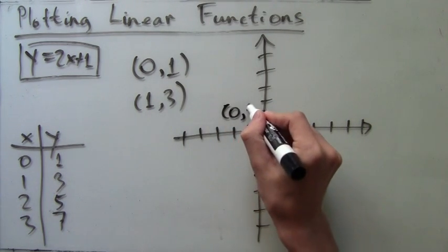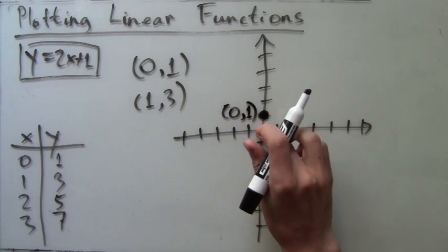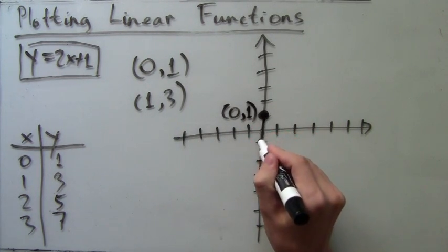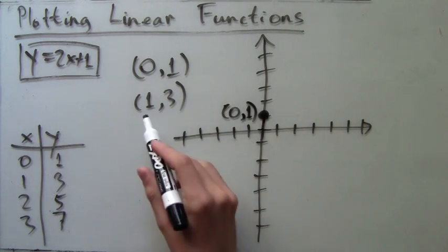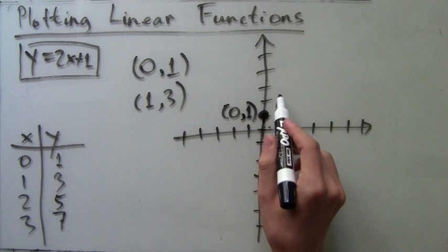The next point is (1,3). The 1 means it's 1 to the right of the origin and the 3 means it's 3 above. So here we have 1 to the right and 3 up, and here's the point.